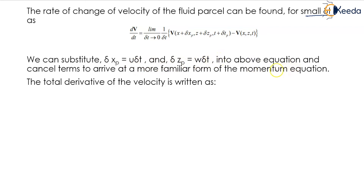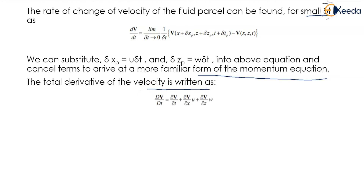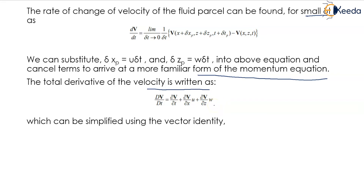Substituting and canceling terms, we arrive at a more familiar form of the momentum equation. Hence the total derivative of the velocity is written as dv/dt = ∂v/∂t + (∂v/∂x)·u + (∂v/∂z)·w, which can be simplified using the vector identity.